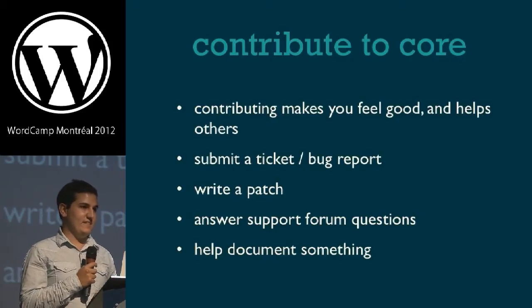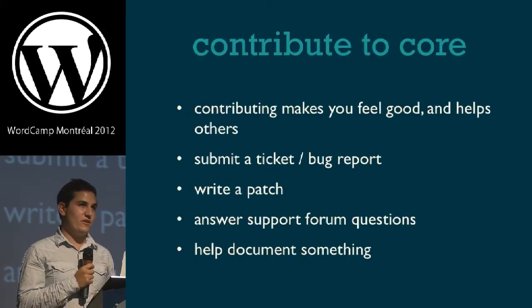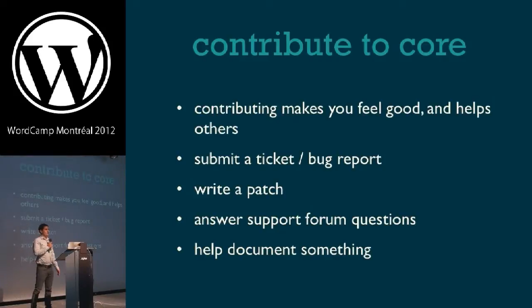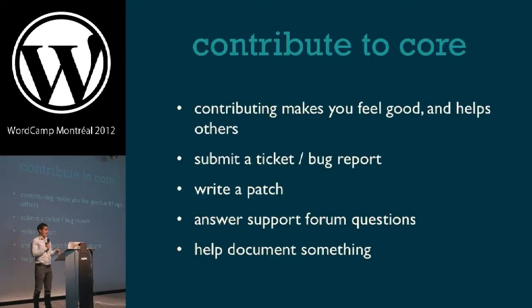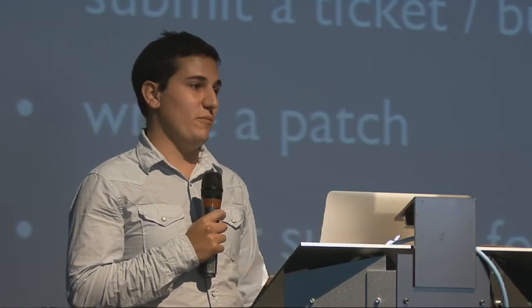A lot of people get scared by the idea of contributing to core — they either think they're not good enough or that they'll get a bad code review. But really, there are all kinds of different ways to contribute to core, and all of them are extremely welcoming. The more contributors there are, the better the platform will get. You can contribute by submitting a ticket or bug report on track.wordpress.org, which is the project management tool used to track the open source project. Along with your ticket, you can write a patch as the fix for the bug you're reporting, or find an existing ticket without a patch and submit one.